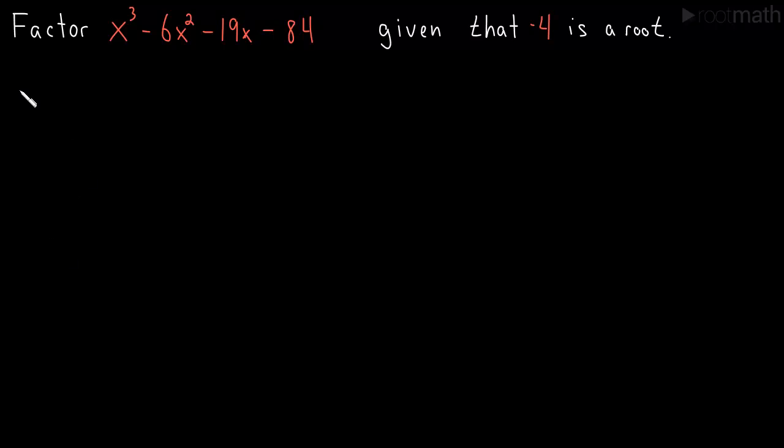So how do we do this? Well, we always take the root that we're given and we put it in a little corner, and then we take the coefficients of our polynomial we're trying to factor. So the coefficient of x cubed is 1, the coefficient of x squared is minus 6, coefficient of x is minus 19, and then we have the constant term 84.